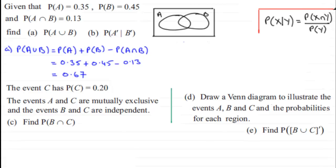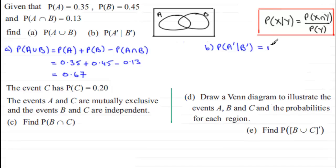Applying this formula, P(A'|B') = P(A'∩B') / P(B'). An important warning: P(A'∩B') is not necessarily P(A') multiplied by P(B') — we need to check the Venn diagram rather than assume independence.